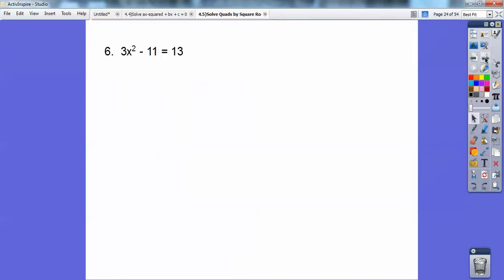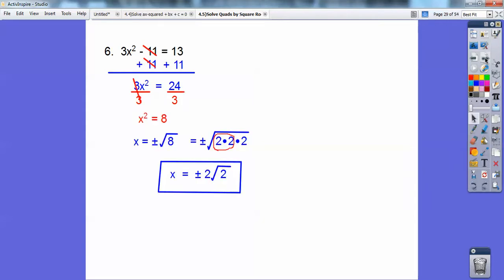Here, I'm going to go ahead and add 11 to both sides, and I get 24, divide by 3, and I get 8, and then x equals plus or minus the square root of 8. 8 is 2 times 2 times 2, so it's plus or minus 2 root 2. Simplified radical answers are best.